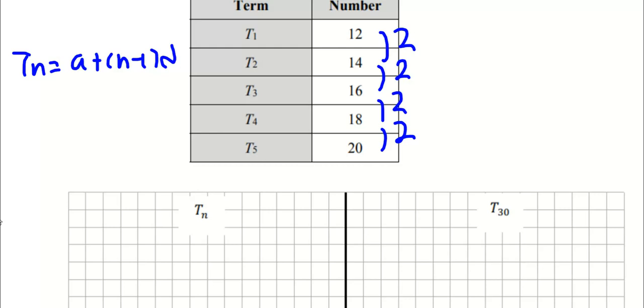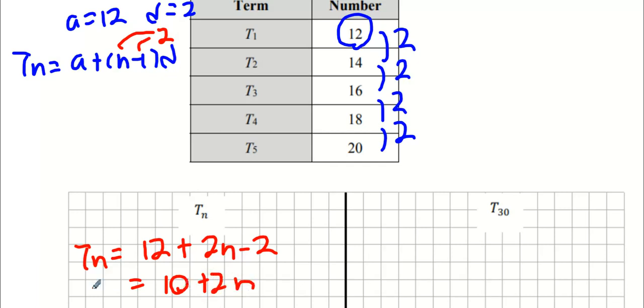What's the A value? The A value is always the first part of the sequence, which is 12. Who knows what the D value is? 2. So we're going to put TN equals 12 plus N minus 1 times 2. So that'll be 2N minus 2. You multiply D into the N minus 1. And you've got 10 plus 2N.